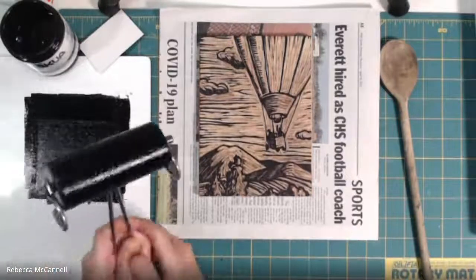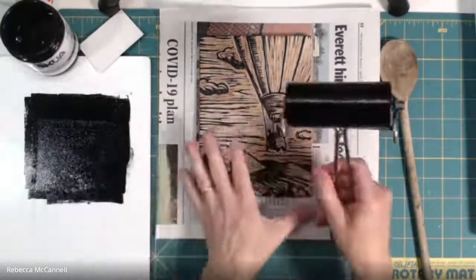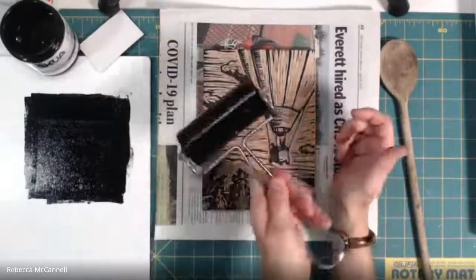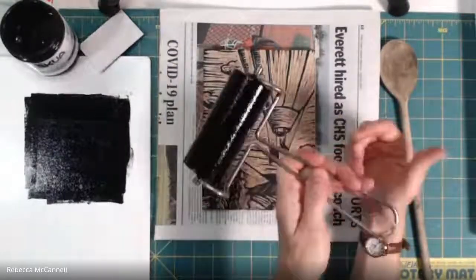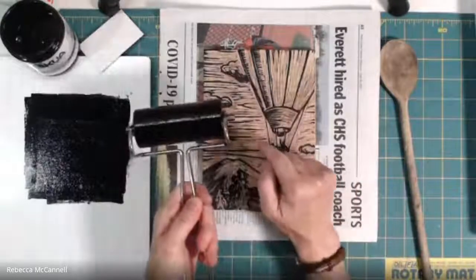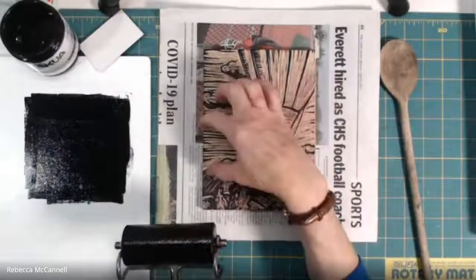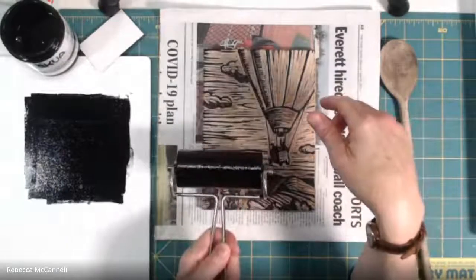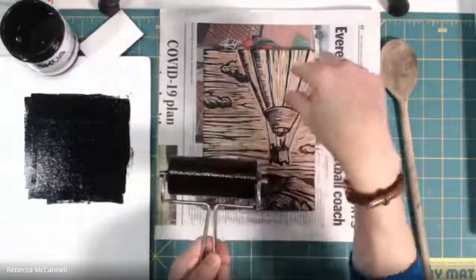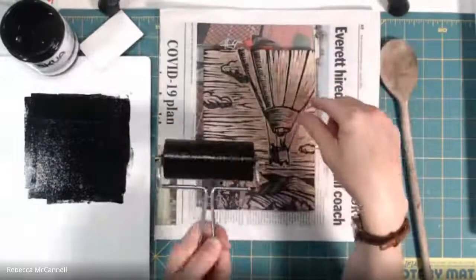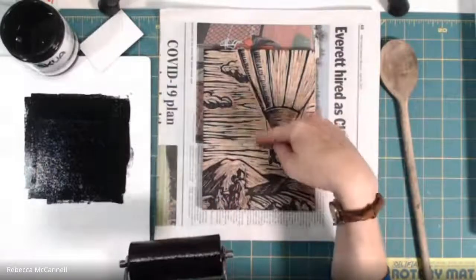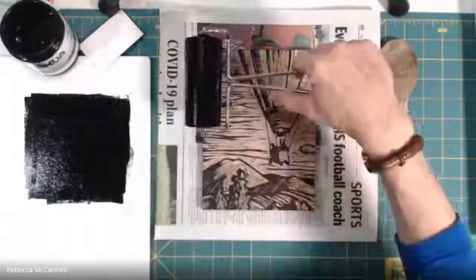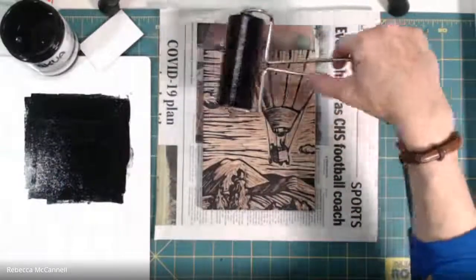We've distributed the ink on the roller and now we're going to start distributing it onto the block. I am thinking about which way to orient the roller so that I don't get very much ink down in the low areas of my block. In this part of the sky I cut most of the marks horizontally, so if I were to roll across it this way every time I hit one of those low areas the roller may drop down into the low parts of the block there and ink it up accidentally.